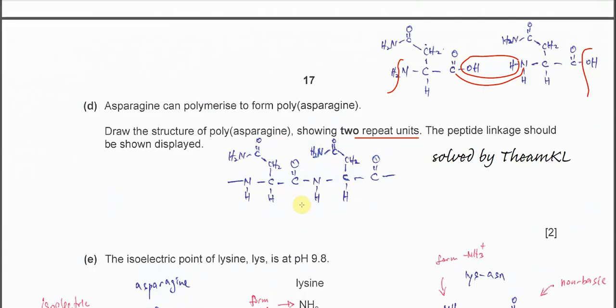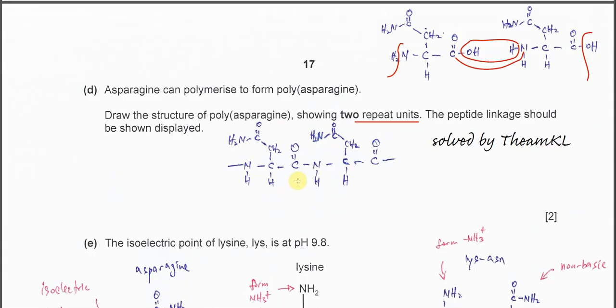This is the two repeat units. Because this polymer is just from one monomer, what you need to show is one repeat unit and two repeat units. These are the two repeat units from this amino acid, so you just draw the polymer chain with two repeat units.